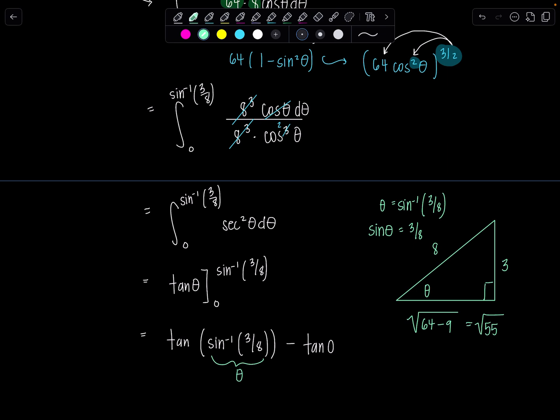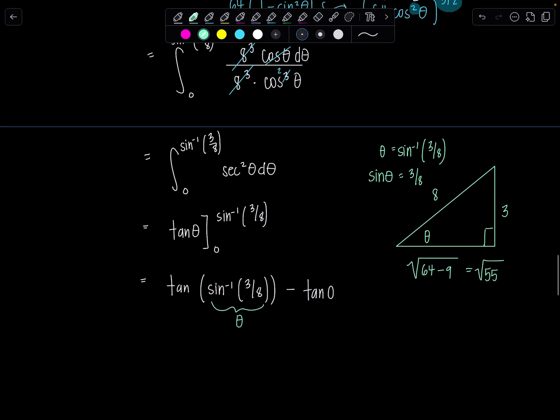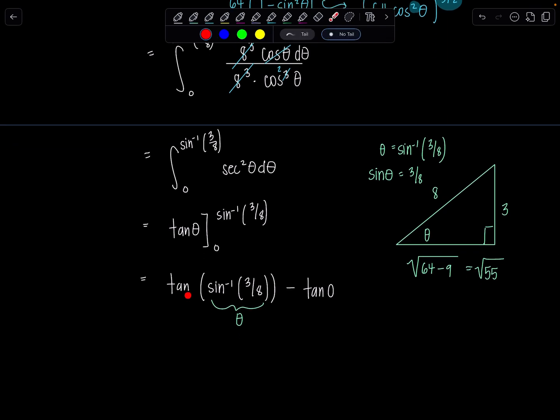This is that theta right here. So using the triangle, then you're just going to say, okay, what's the ratio of the opposite side over the adjacent side? It's 3 over the square root of 55 minus, and then tangent of 0, you should just know that's going to be 0. So we're done. Final answer is 3 over square root 55.